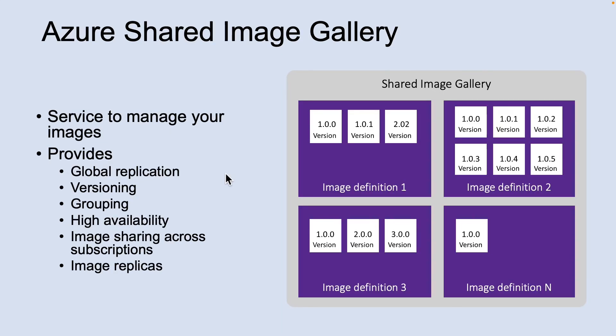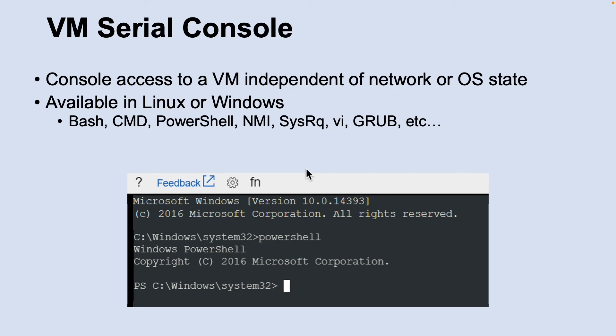Another important service to understand is Azure Shared Image Gallery, or SIG. Shared Image Gallery is a service that helps you build structure and organization around your managed images. It provides managed global replication of images, versioning and grouping of images, highly available images with zone-redundant storage, sharing across subscriptions and even between Azure AD tenants, and scaling your deployment with image replicas in each region.